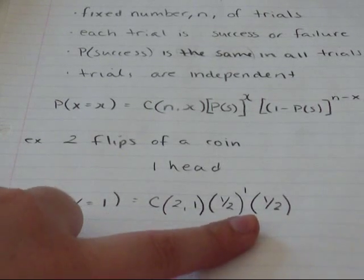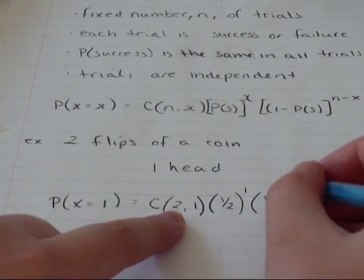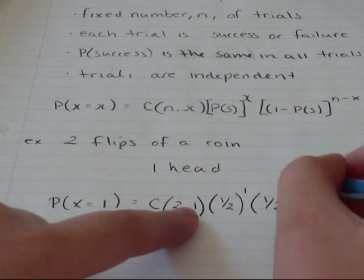And however many failures I'm going to have is N, which is two, minus X, which is one. So that's just going to be one.